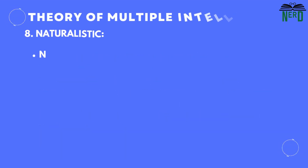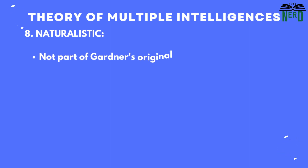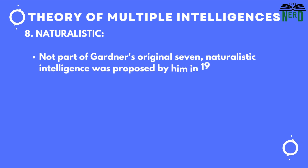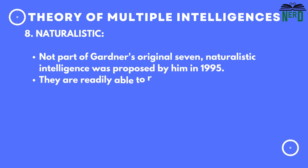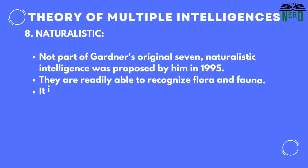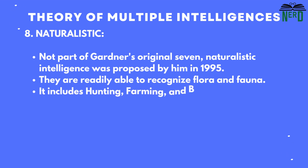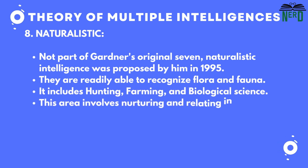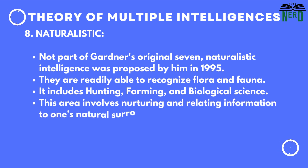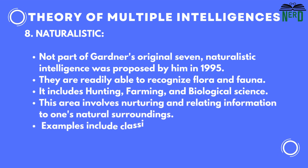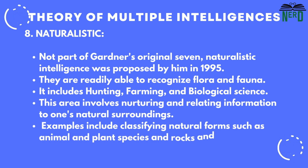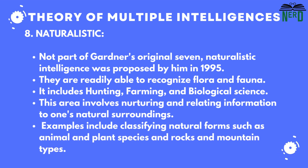Eighth is naturalistic — not part of Gardner's original seven. He proposed naturalistic intelligence in 1995. They are readily able to identify flora and fauna. It includes hunting, farming, and biological science. This area involves nurturing and relating information to one's natural surroundings. Examples include classifying natural forms such as animal and plant species and rocks and mountain types.